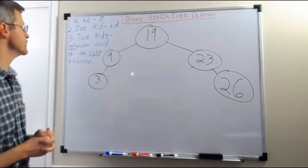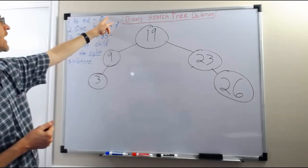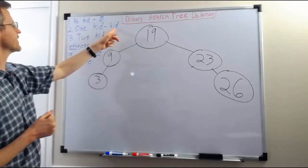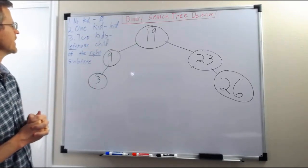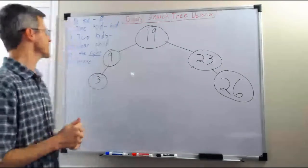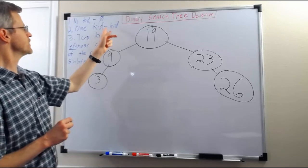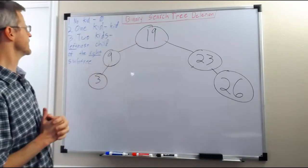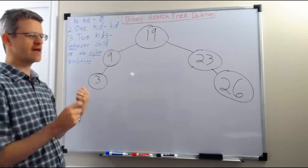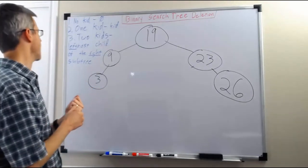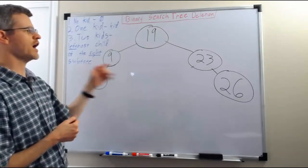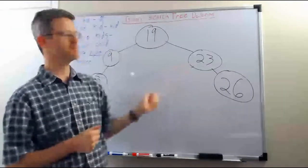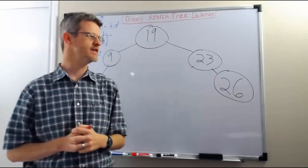So, three cases for removing a node from a tree. One: the node we're removing has no children, in which case we don't need to promote anything up — in the book's code, they promote up a pointer to null. Two: the node we're removing has one subtree, and in that case we promote up that child into the place of the node we're removing. Three: the node we're removing has a subtree on the left and a subtree on the right — in that case, we pick the leftmost child of the right subtree, because that's the in-order successor and the only node guaranteed to be promotable while still maintaining the ordering of the binary search tree.